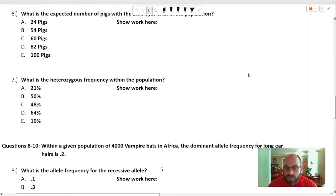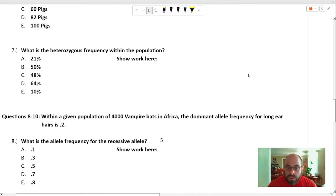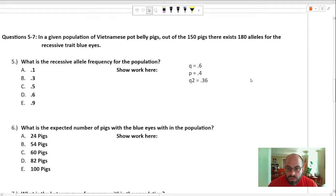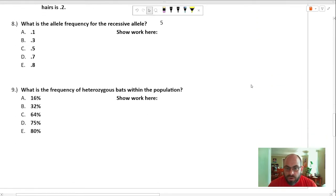Moving on. Wait, no, wait, number seven. Sorry. What was the heterozygous frequency? 2pq, so .6 times .4 times 2 equals .48. Moving on to number eight.